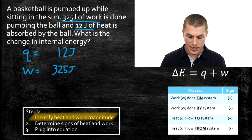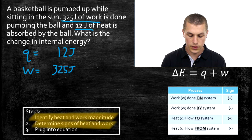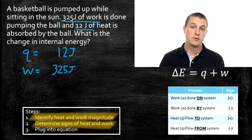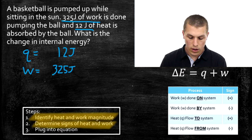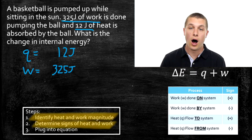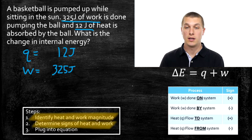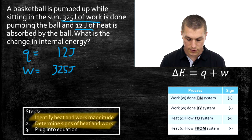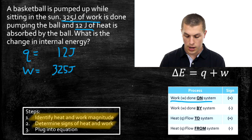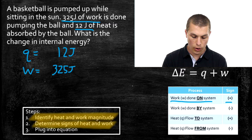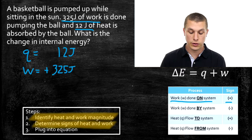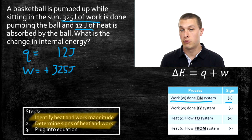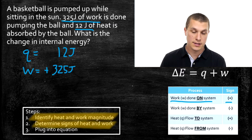The next step — and the hardest step — is to determine the signs of our heat and work. We have to decide: did each process increase or decrease the internal energy of the ball? We pumped the ball up, so we're doing work on the ball. Since work is done on the system, going over to our chart, work done on the system has a positive change. So our work is positive. I'll explicitly write the positive sign to show we've thought about it.